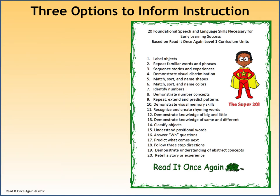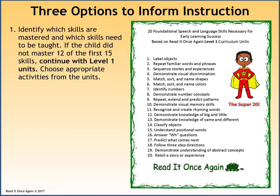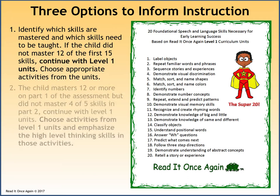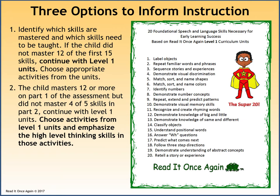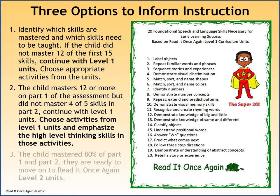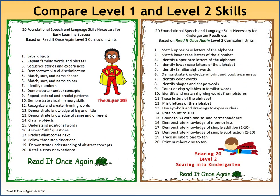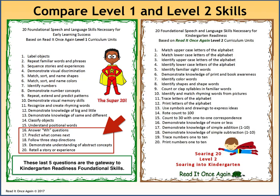There are three options for teachers after determining the child's assessment results. First, identify which skills are mastered and which need to be taught — if the child did not master 12 of the first 15, continue with Level 1 units and choose appropriate activities. Second, if the child masters 12 or more on Part 1 but did not master 4 of 5 on Part 2, continue with Level 1 and emphasize high-level thinking skills in those activities. Third, if the child masters 80% of both Part 1 and Part 2, they are ready to move on to Read It Once Again Level 2 units. When we compare the Super 20 Level 1 Foundational Skills to the Soaring 20 Level 2 Foundational Skills, the last 5 questions in the Super 20 are the gateway to Kindergarten Readiness Foundational Skills.